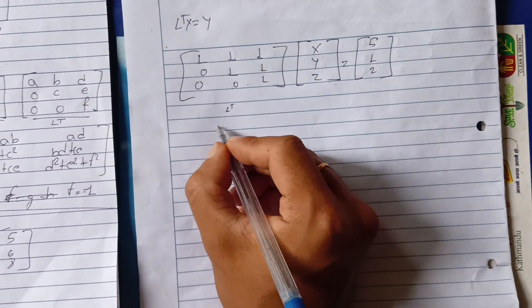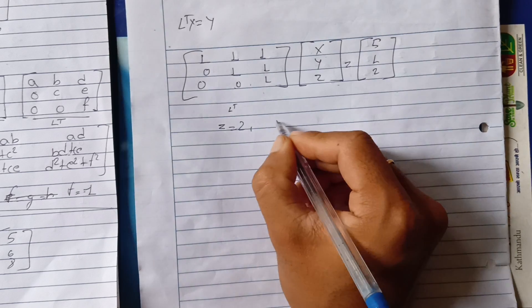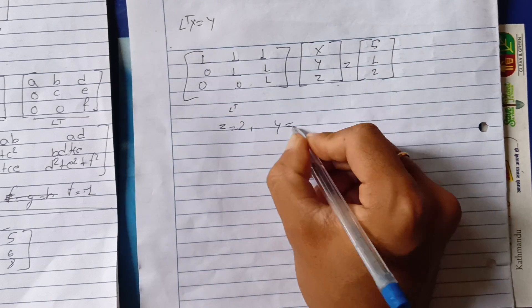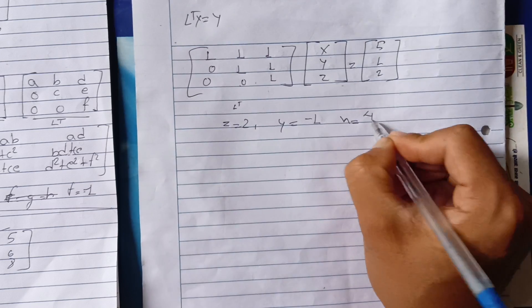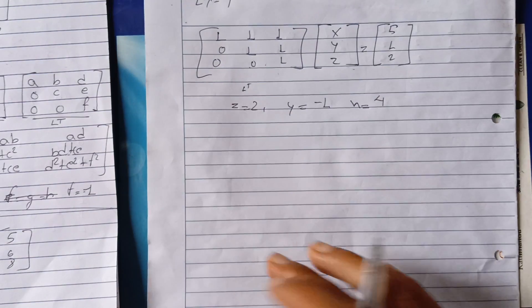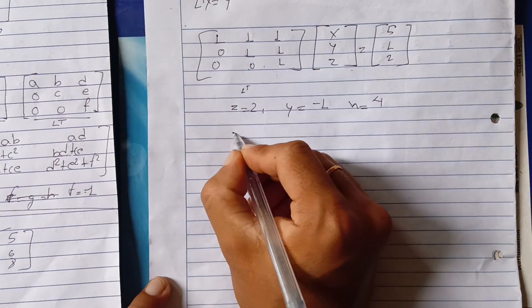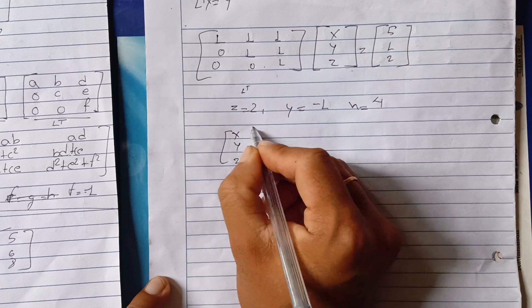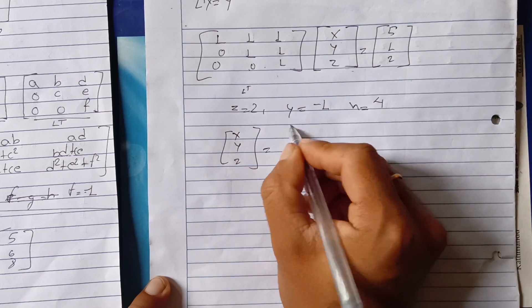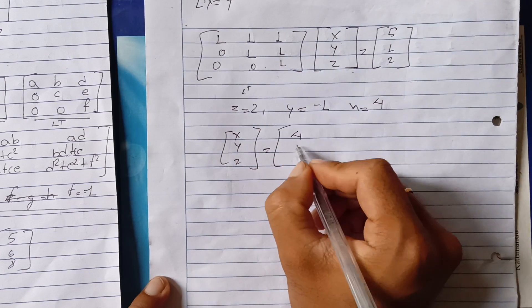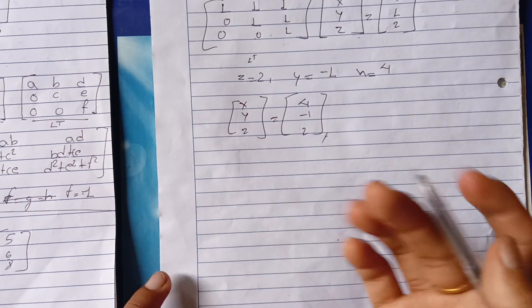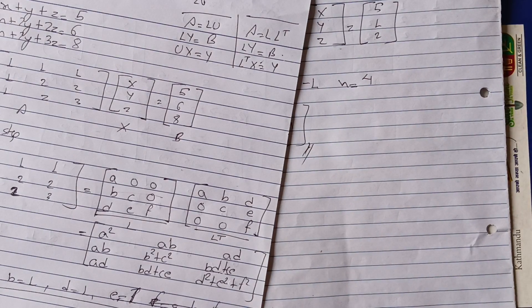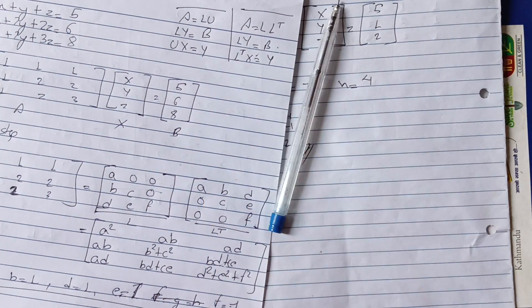So J·T goes to Y equals minus one, and X equals four. The question was to find the X, Y, Z values for the particular question — and that is the answer for this video.